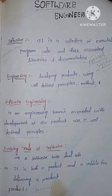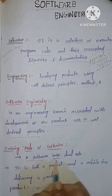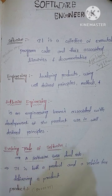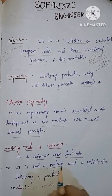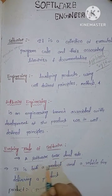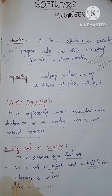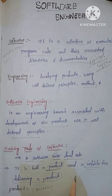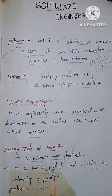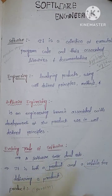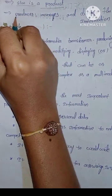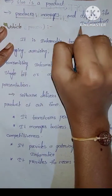The next topic is the evolving role of software - software has a dual role. It has two types: it is both a product and a vehicle. When you develop a product in your company for delivering a product, you have two roles - a product and a vehicle.